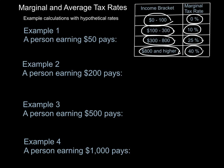So here we have four examples. One person earns fifty dollars, the next person two hundred, five hundred, and a thousand. You can pause the video at this point and see if you can calculate on your own what tax amount each person pays and then also calculate the average tax rate.